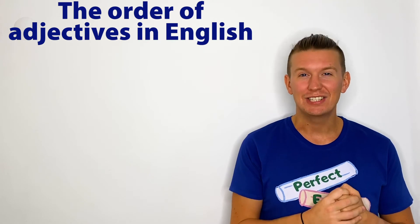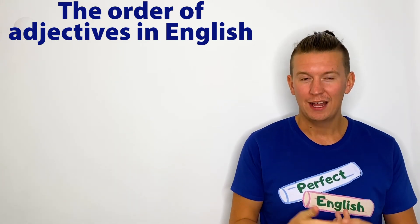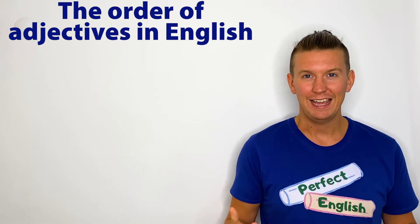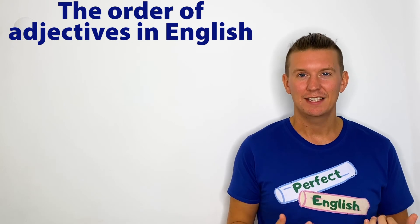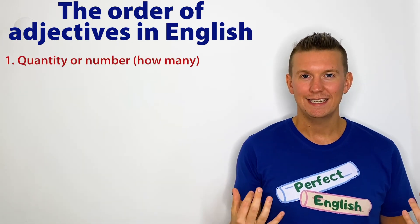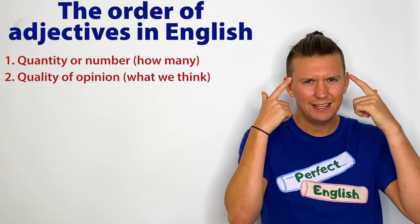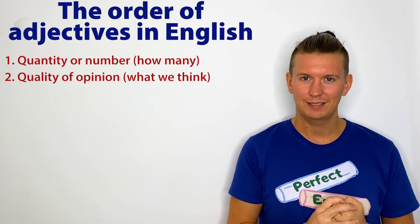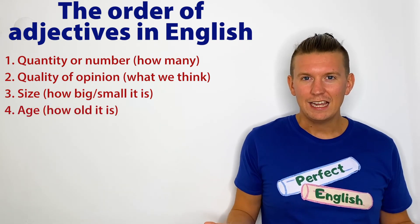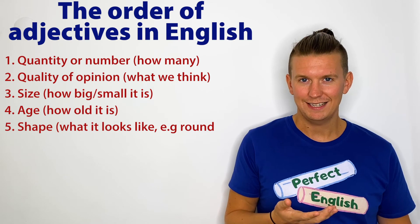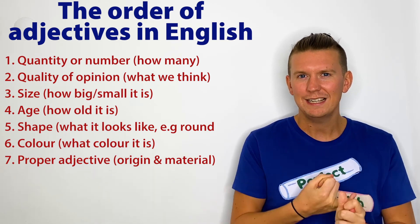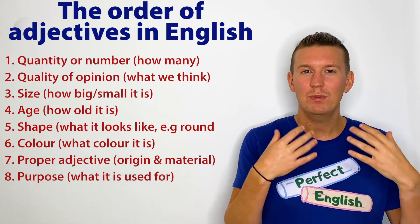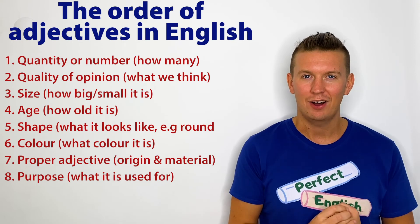So there you have the order in which we use adjectives in English. You can now describe things correctly and in the right order. A reminder of the order — the eight adjectives: first, the quantity (how many are there?); then an opinion (what do we think about the noun?); the size (is it big or small?); the age (how old is it?); the shape (what shape is it?); the colour (what colour is it?); and the proper adjective — the origin (where is it from?) and the material (what is it made of?); and last, the purpose (what can we use it for?).